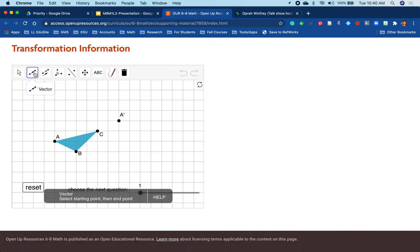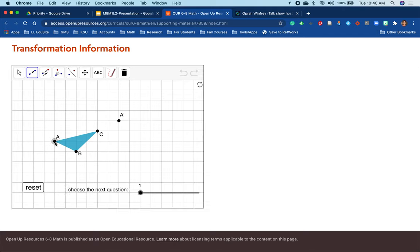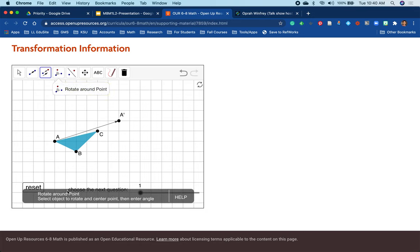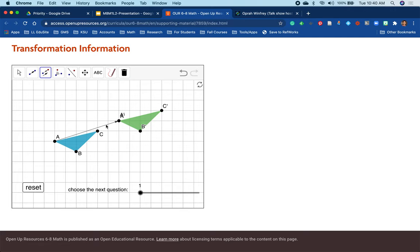So the first command here is to draw a vector. And so it provides you some directions here. Select starting point, then the end point. And so our starting point is the pre-image, a vector to A prime. By creating that vector, the second command allows us to take the image and translate it along that vector.